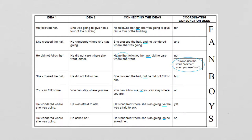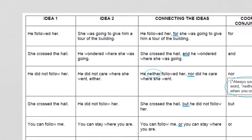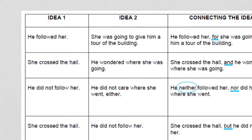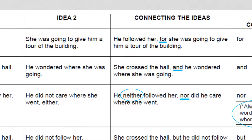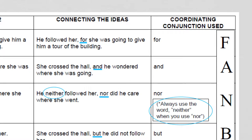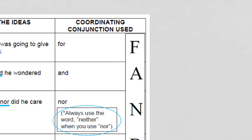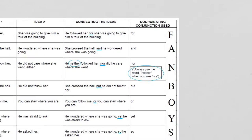I have more examples of coordinating conjunctions. First idea: 'He followed her' and 'She was going to give him a tour of the building' combine to: 'He followed her, for she was going to give him a tour of the building.' Our coordinating conjunction was 'for' — that's the first letter in FANBOYS. This is a nice chart to quickly look at how it all works.